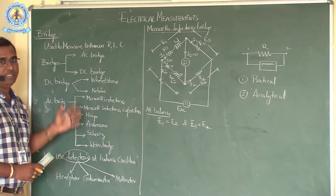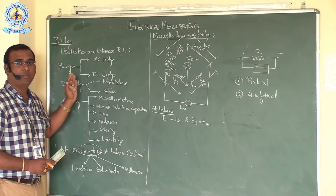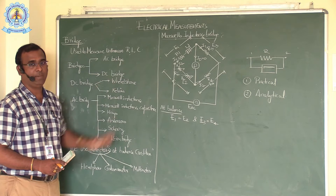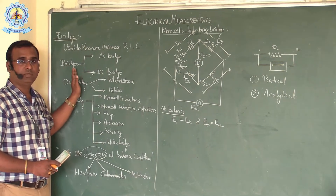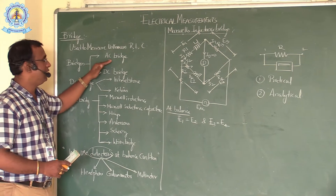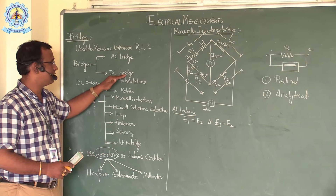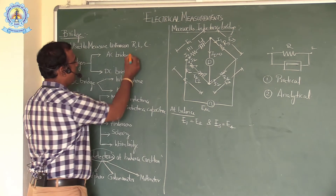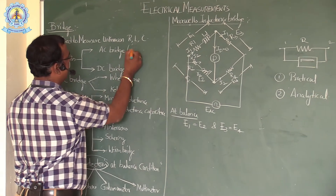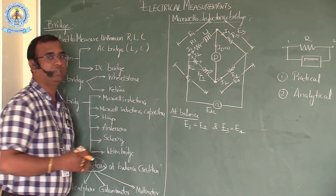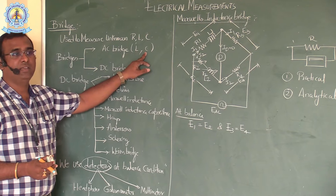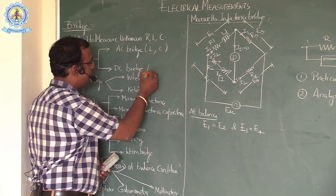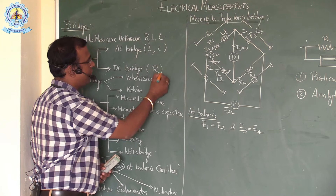What is a bridge? Bridge networks are mainly used to measure the unknown value of resistance, inductance, and capacitance. These bridge networks are classified into two types: AC bridge and DC bridge. AC bridges are mainly used to measure inductance and capacitance, because these are affected by AC. The DC bridge is mainly used to measure the unknown value of resistance only.